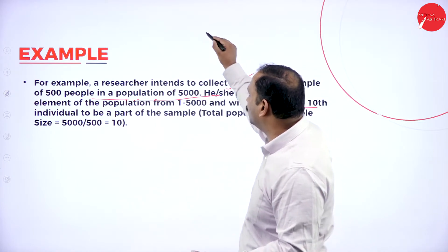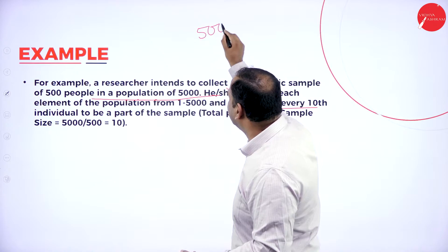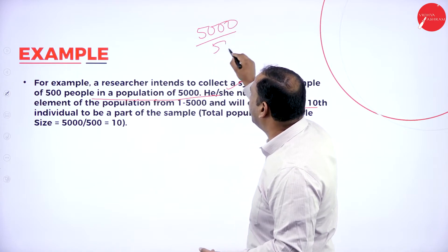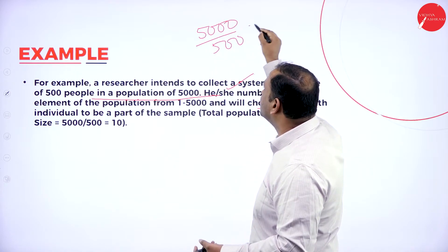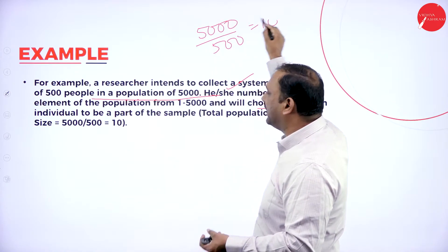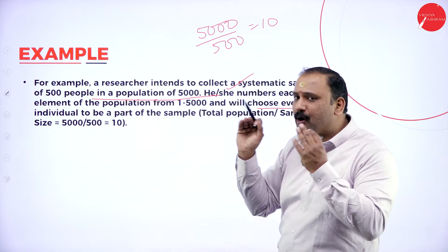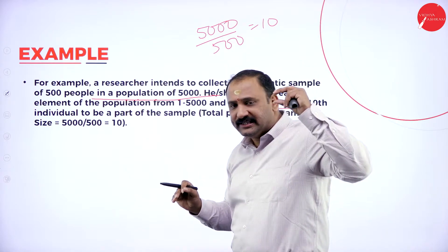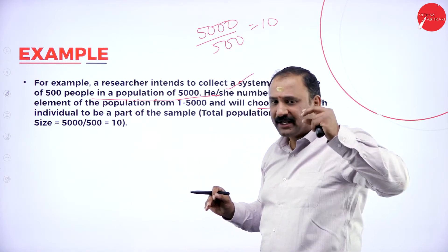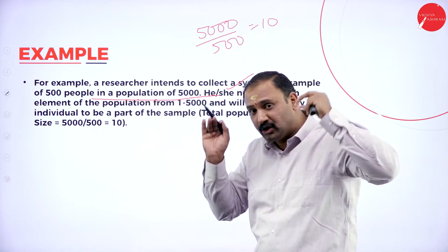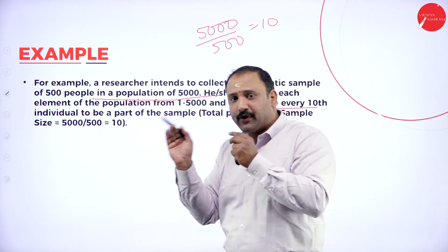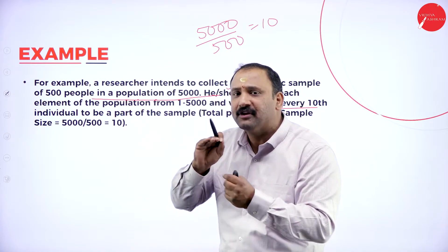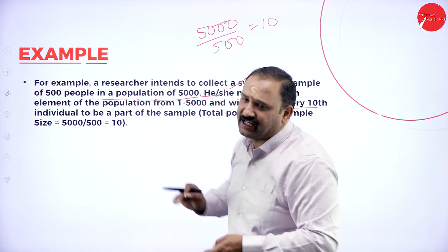By dividing 5,000 by 500, we get an interval gap of 10. So everyone from 1 to 5,000 is covered at a gap interval of 10 each, ensuring the entire population is systematically represented.